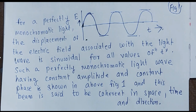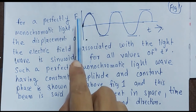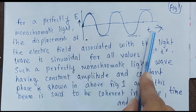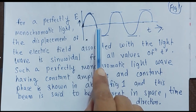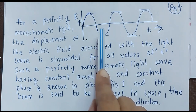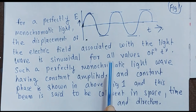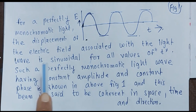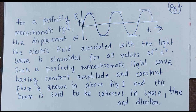For a perfectly monochromatic light, we plot the electric field versus time and see it is sinusoidal in nature, having the same amplitude throughout. The electric field associated with the light wave is sinusoidal for all values of time T. Such a perfectly monochromatic light wave having constant amplitude and constant phase is shown in figure 1. This beam is said to be coherent in space, coherent in time, as well as coherent with respect to direction.